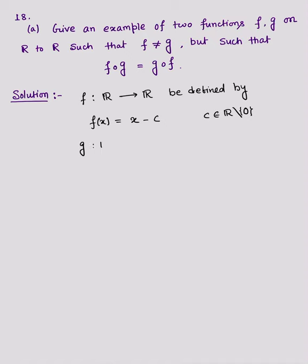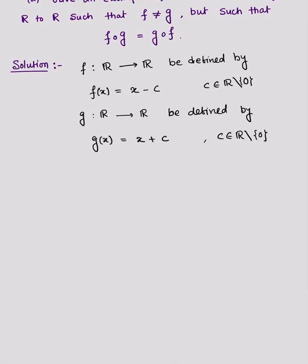And g: R → R be defined by g(x) = x + c, where c belongs to R minus 0. Now you can clearly see that f is not equal to g for all x belonging to R.